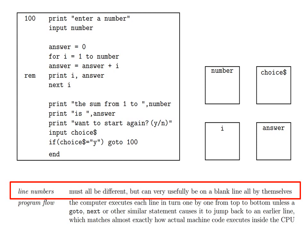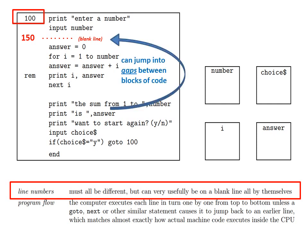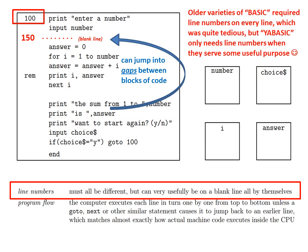Then there are line numbers. For example, 100 is a line number. These line numbers must all be different, but they can very usefully be placed on a blank line all by themselves. For example, we could place the line number 150 on a blank line, which is very useful because it means we can jump into the gaps between blocks of code. Older varieties of BASIC required line numbers on every line, which was quite tedious. But YARBASIC only needs line numbers when they serve some useful purpose.